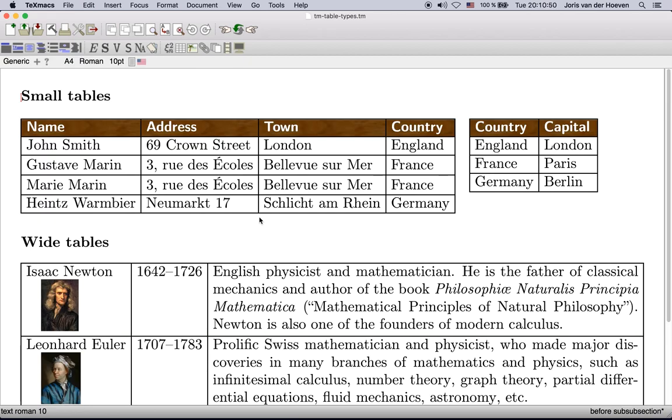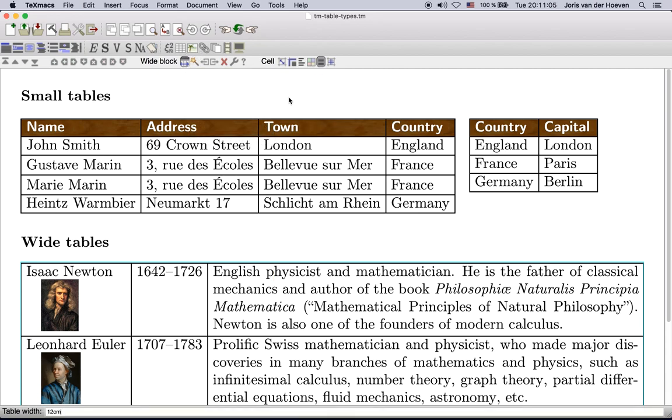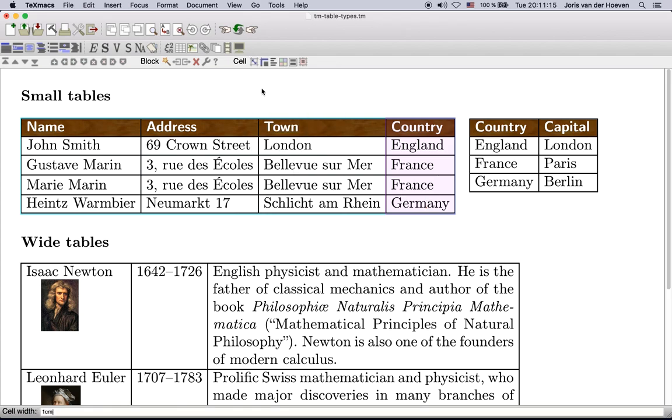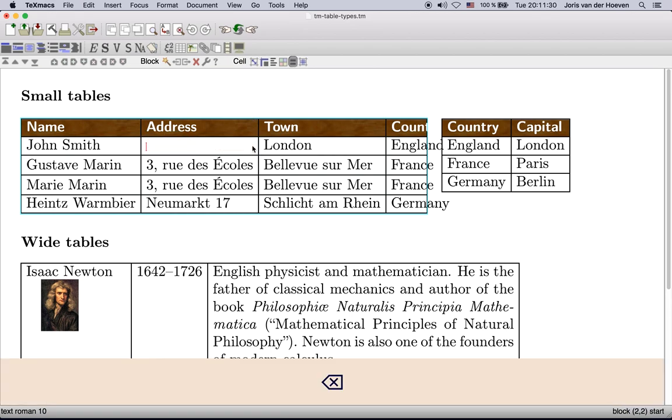Of course, the default settings of these standard types of tables can be overridden. For instance, if we wish our wide table here to be exactly 12 cm wide, then we may proceed as follows. Similarly, we can make the last column of this table exactly 1 cm wide. We may also enable or disable line breaking using the following toggle here, doing that inside this cell. This allows us to enter a 2 line address.